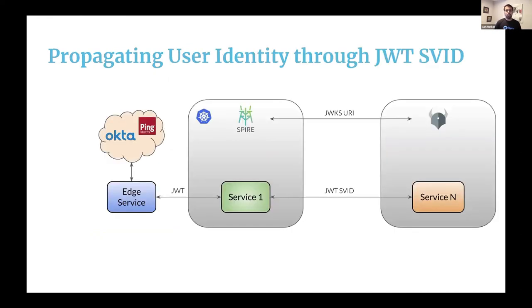On the other hand, if John, who is an enrollee, tries to see the claims, OPA is going to block this because John is an enrollee. OPA will deny the decision, and although John can see the invoices, the claims will be empty. Now I'm going to hand it over to Madhu, who will do a live demo and talk about propagating user identity through JWTs.